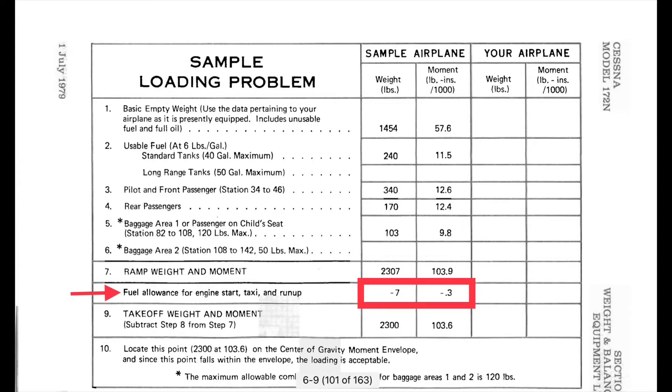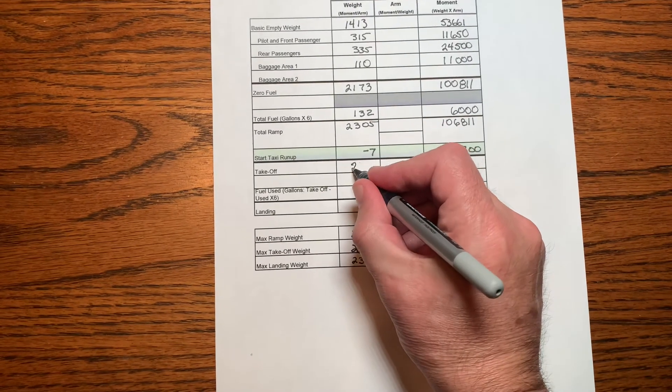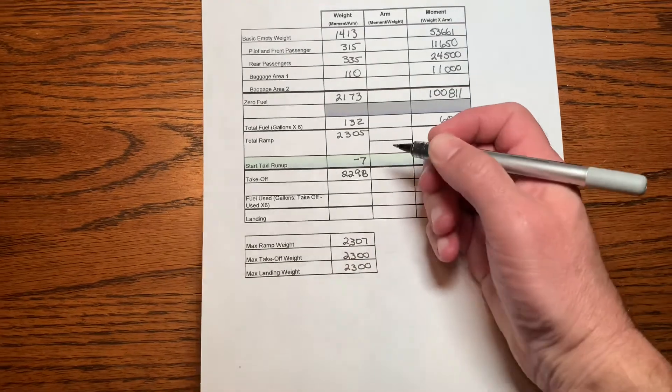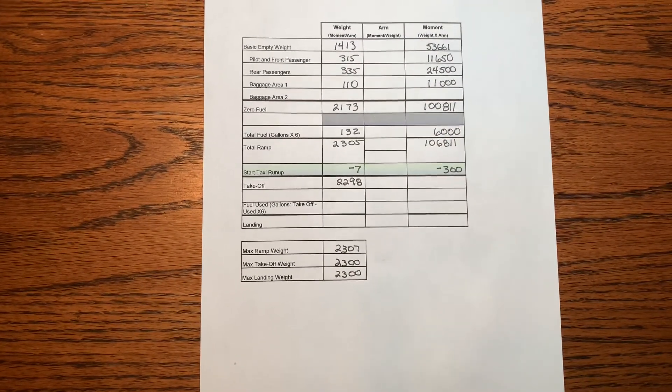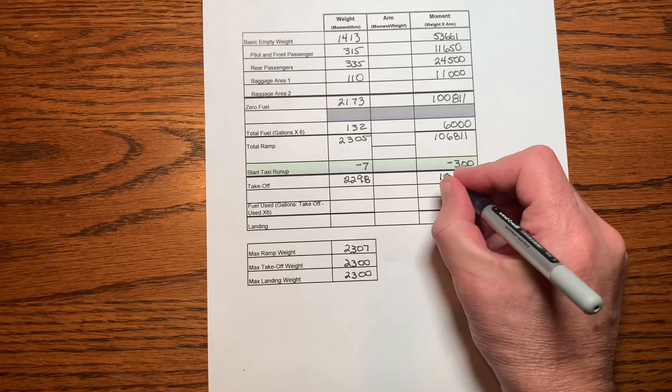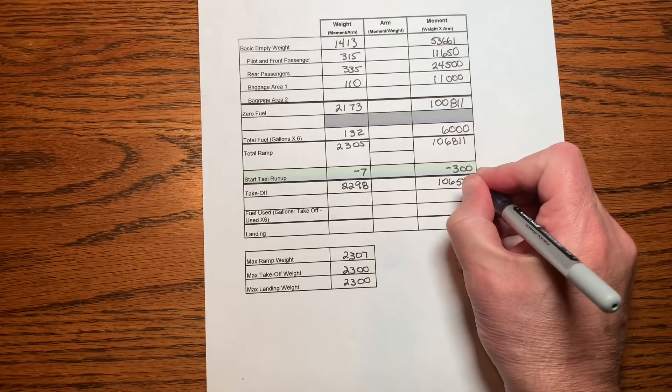Can we start our engines? Well, yes — but there is one more thing to do. We need to find our total takeoff weight by subtracting out the fuel used for startup, taxi, and run-up. Estimates for this can be found in the sample weight and balance table in Chapter 6 of your POH. Cessna estimates 7 pounds of fuel — just over a gallon — with a moment value of 300 pound-inches. Subtract the weight: 2,305 minus 7 equals 2,298 pounds. Subtract the moment: 106,811 minus 300 equals 106,511 pound-inches. Let's enter these values in the table.